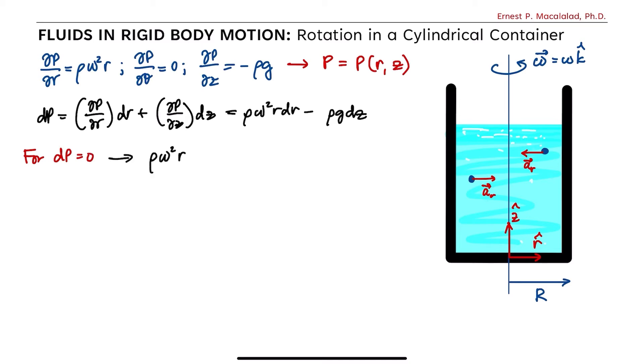We now have rho omega squared r dr equals rho g dz. And if we're going to integrate this on both sides, we can now have the equation for the isobar. Z for the isobar is equal to omega squared over g times the integral of r dr, and this is equal to omega squared r squared over 2g plus an integration constant.